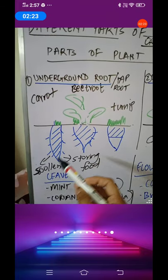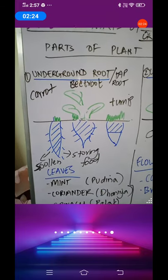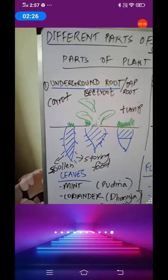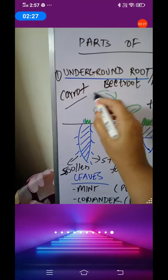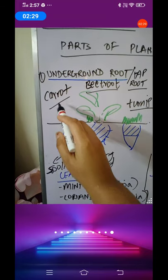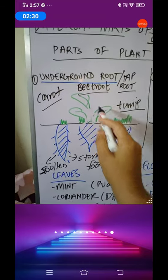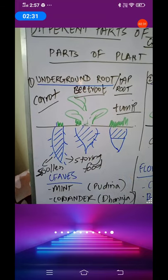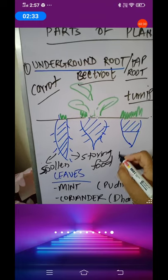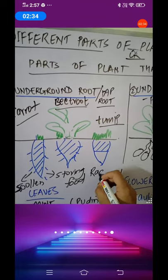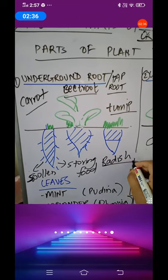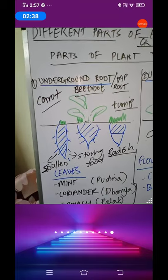In these underground roots, plants are storing their extra food. Which type of plants come in this category? It can be carrot, beetroot, turnip, radish. These types of plants store food in the underground root.